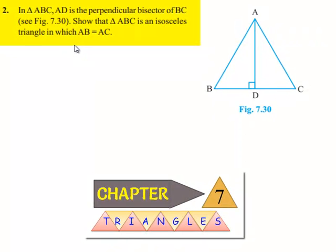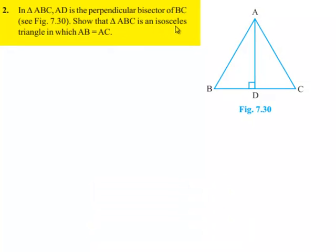Moving on to the second question: In triangle ABC, AD is the perpendicular bisector of BC. Show that triangle ABC is an isosceles triangle in which AB equals AC.